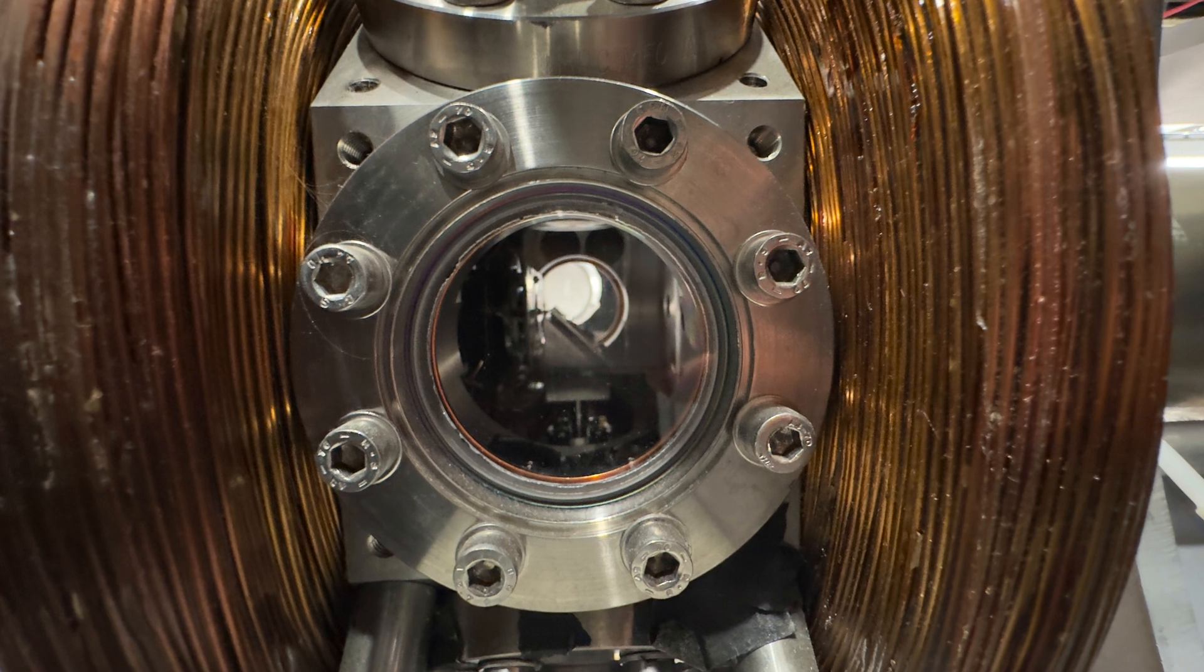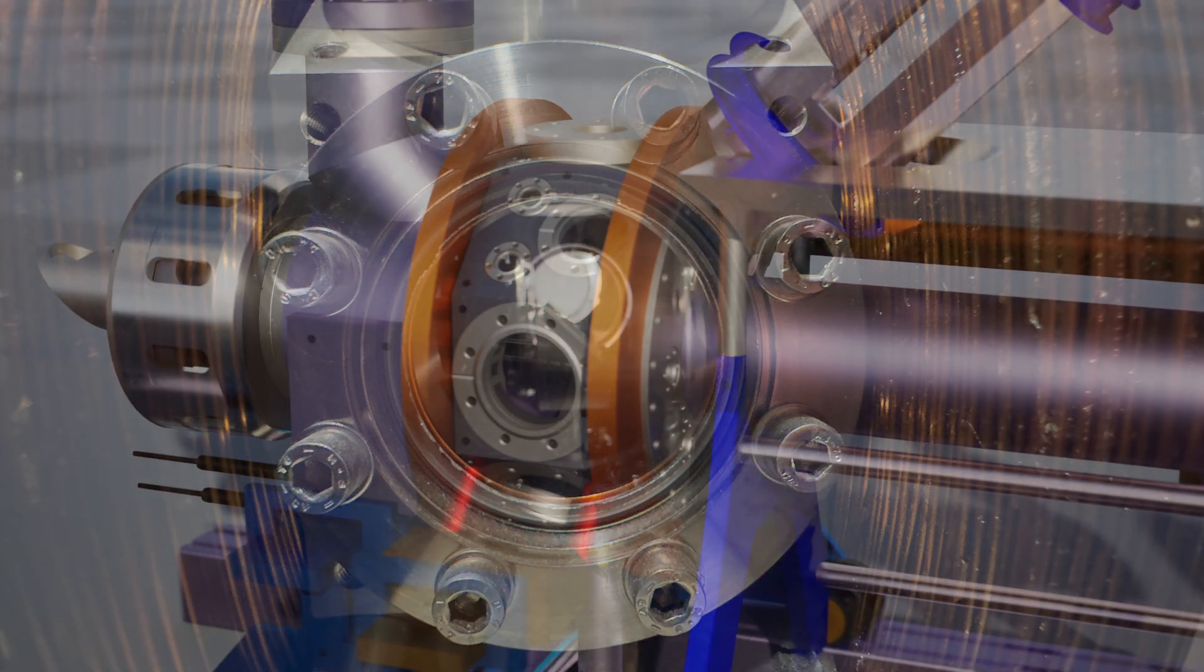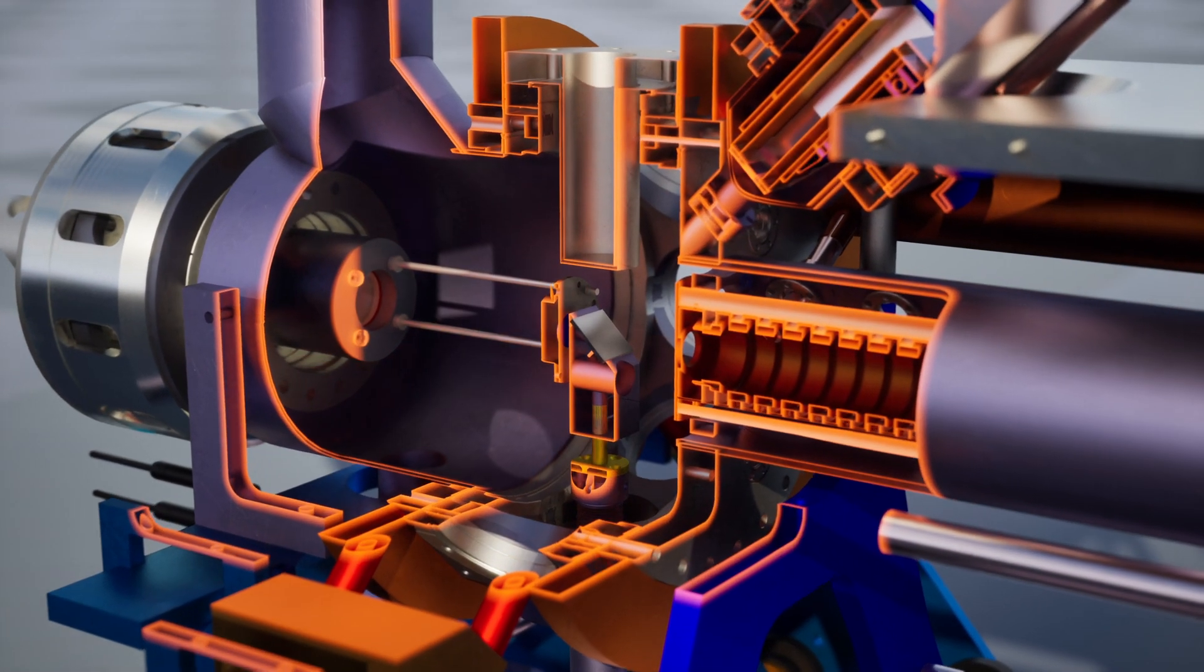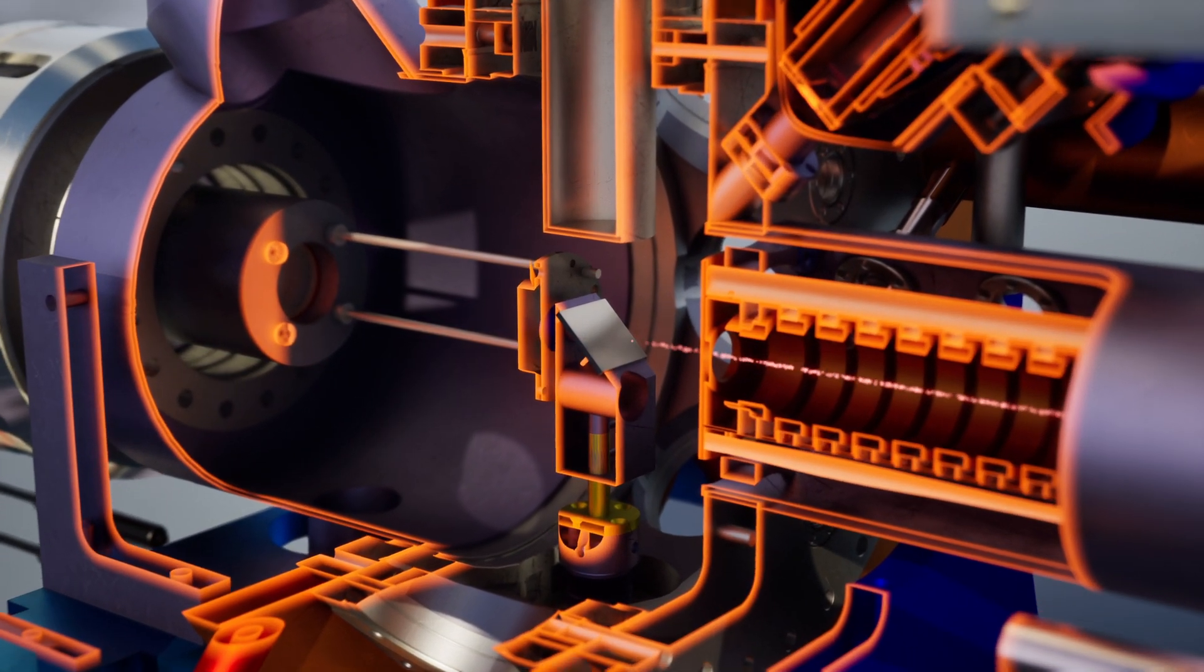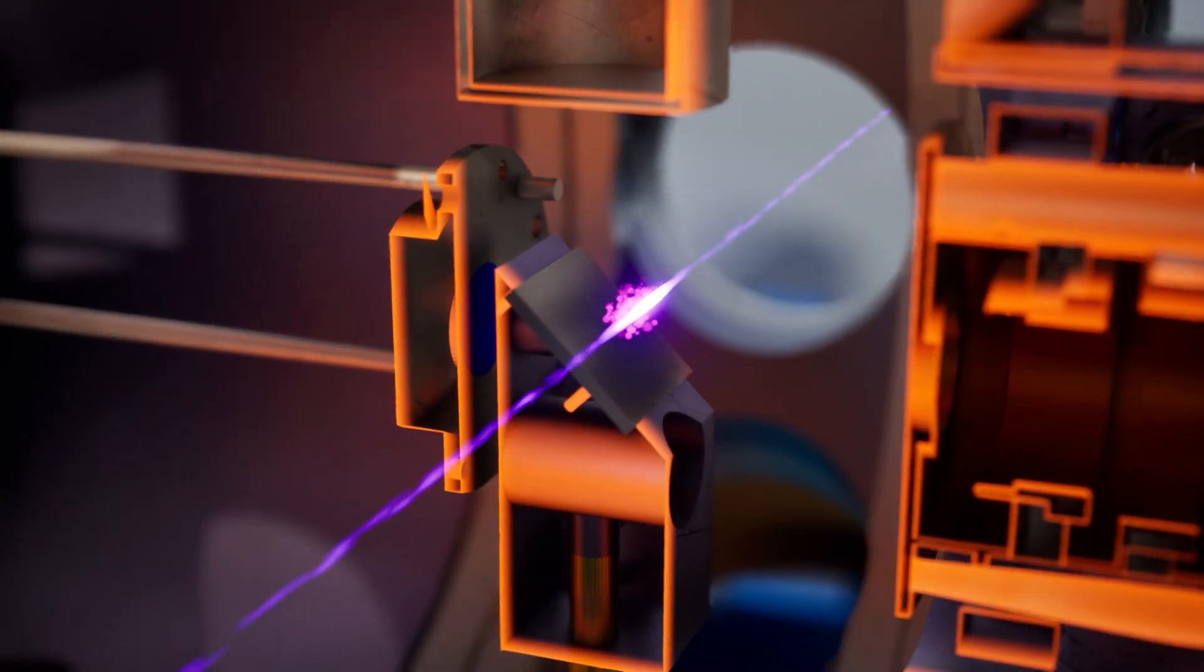Most of the positrons annihilate upon impact with the target, but a certain fraction, about 30%, catch an electron inside the target or at the target surface and form positronium.